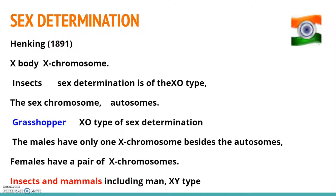Scientists later concluded that this X body was in fact a chromosome, and they later gave it the name X chromosome. It was also observed that in a large number of insects, a specific pattern of sex determination existed.